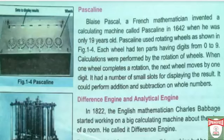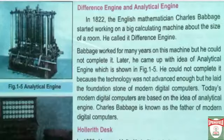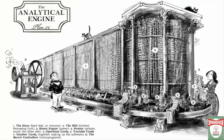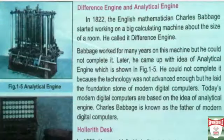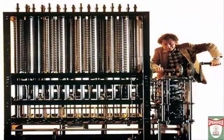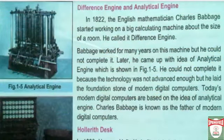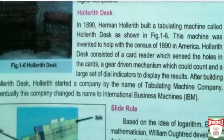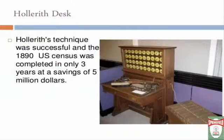Now we talk about the Difference Engine and Analytical Engine. In 1822, the English mathematician Charles Babbage started working on a large calculating machine about the size of a room, which he called the Difference Engine. Babbage worked for many years on this machine but could not complete it. Later he came up with the idea of the Analytical Engine. He could not complete it because the technology was not advanced enough, but he laid the foundation stone of modern digital computers.